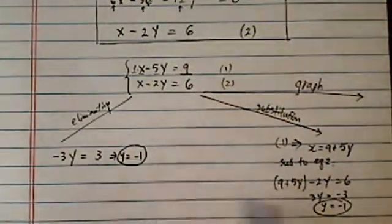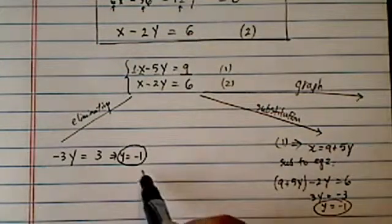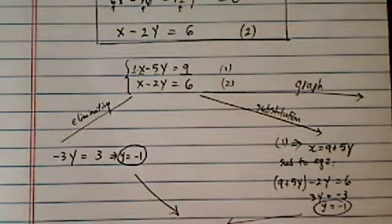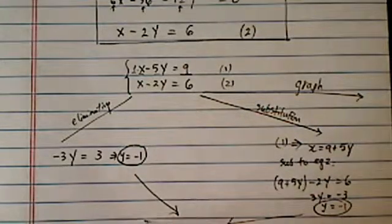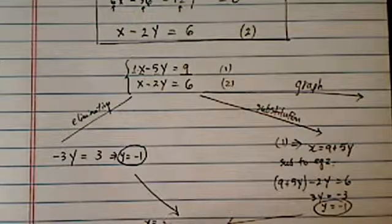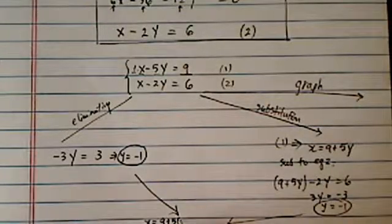All right. So, both cases, we'll get y equal to minus 1. And from here, both methods, it's the same. Once you have y equal to minus 1, you can do x is equal to 9 plus 5y.